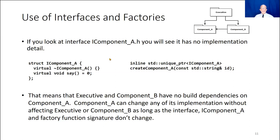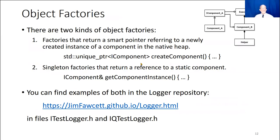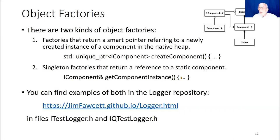There are actually a couple of kinds of factory functions. This is the kind we use in this demo: we return a unique pointer typed as an interface, pointing to a concrete instance on the managed heap. But we could also build a singleton factory that returns a C++ reference to a static instance. That instance sits in static memory, which means it will live for the duration of the program. We'll see that when we talk about our memory model.